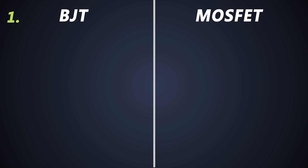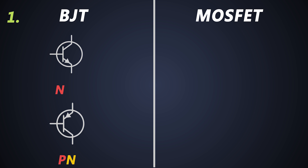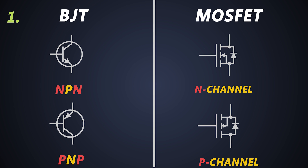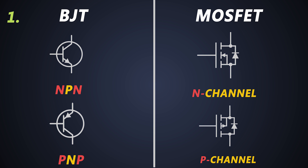We know there are PNP and NPN type BJTs, which we have seen in many of our previous videos with analogies, and these are the schematic symbols. Just like that, we have P-channel and N-channel MOSFETs. The P-channel MOSFET is analogous to PNP transistors, and the N-channel MOSFET is analogous to NPN transistors.